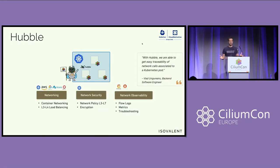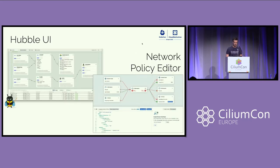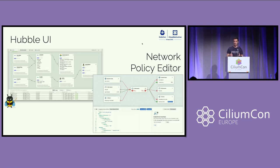The next big feature we added was Hubble, which brings observability functionality into Cilium — flow logs, metrics, and troubleshooting capabilities. With Hubble we also gained Hubble UI, the graphical visualization, as well as the network policy editor to manage, visualize, and maintain network policies.